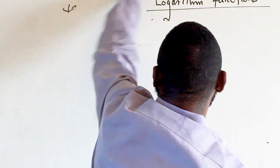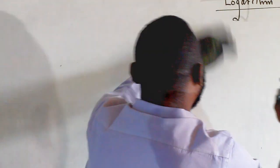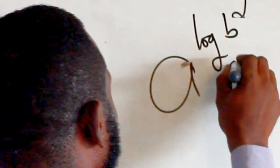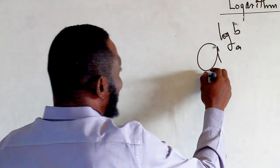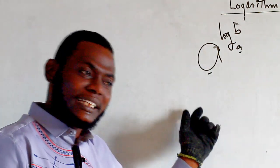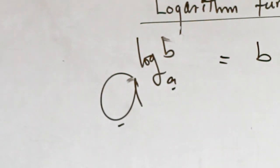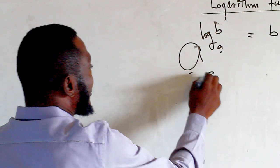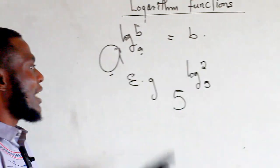What we are looking at today is not indices but logarithms. Last week we covered the law: if a raised to the power of log b equals a raised to the power of log b, these two are the same. So our answer will just be b.